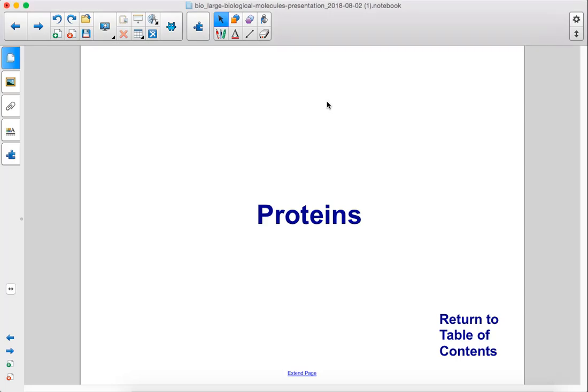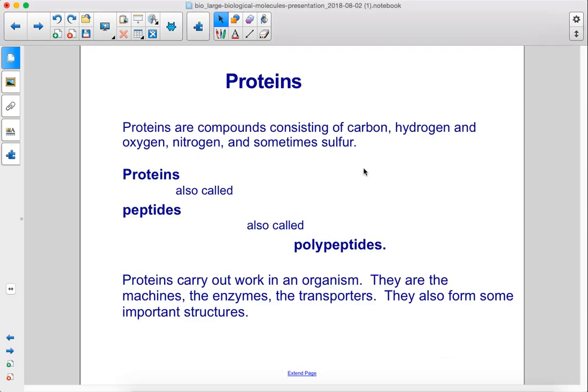Proteins. Proteins are compounds consisting of carbon, hydrogen, and oxygen, nitrogen, and sometimes sulfur. Proteins are also called peptides and also called polypeptides.